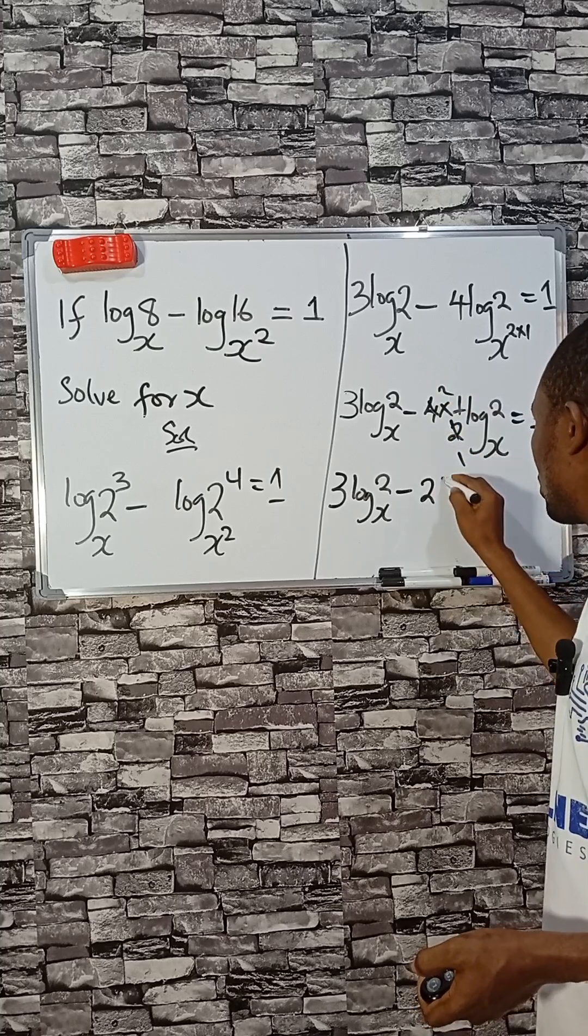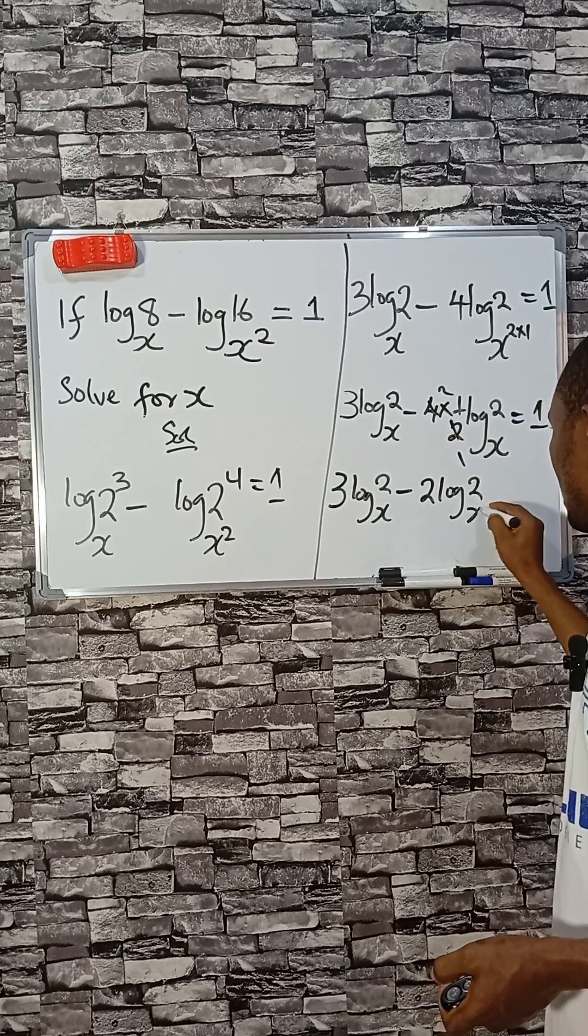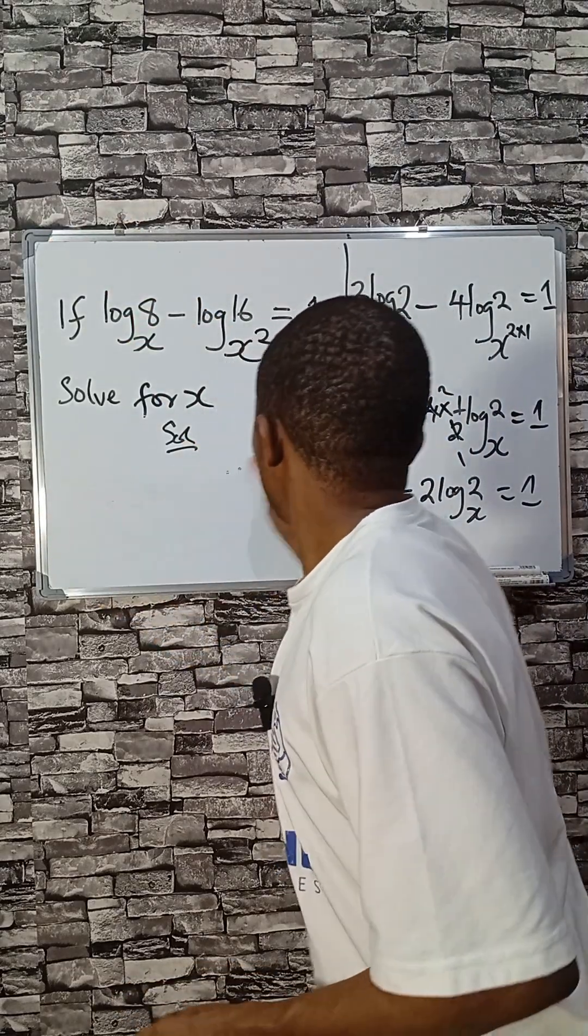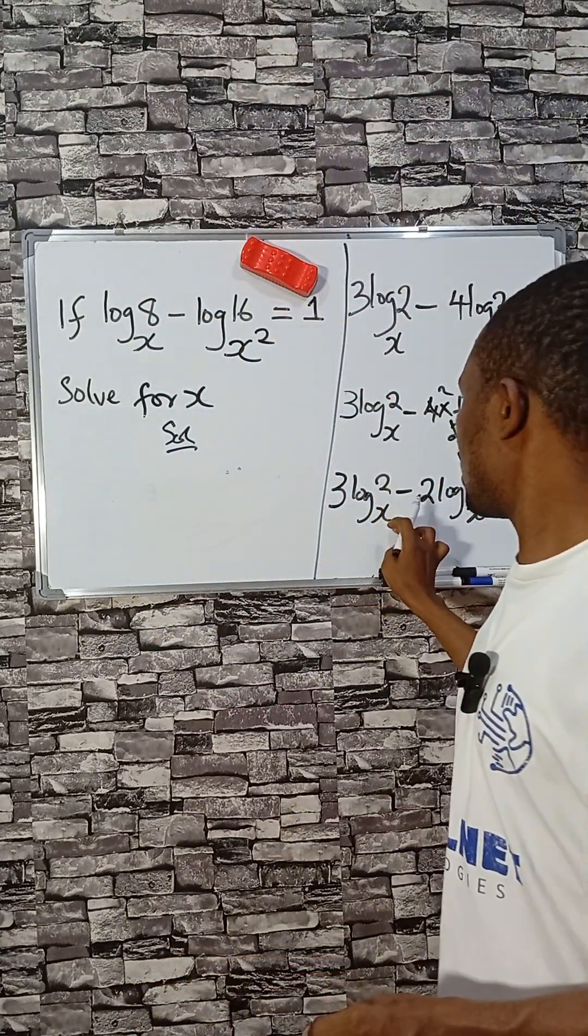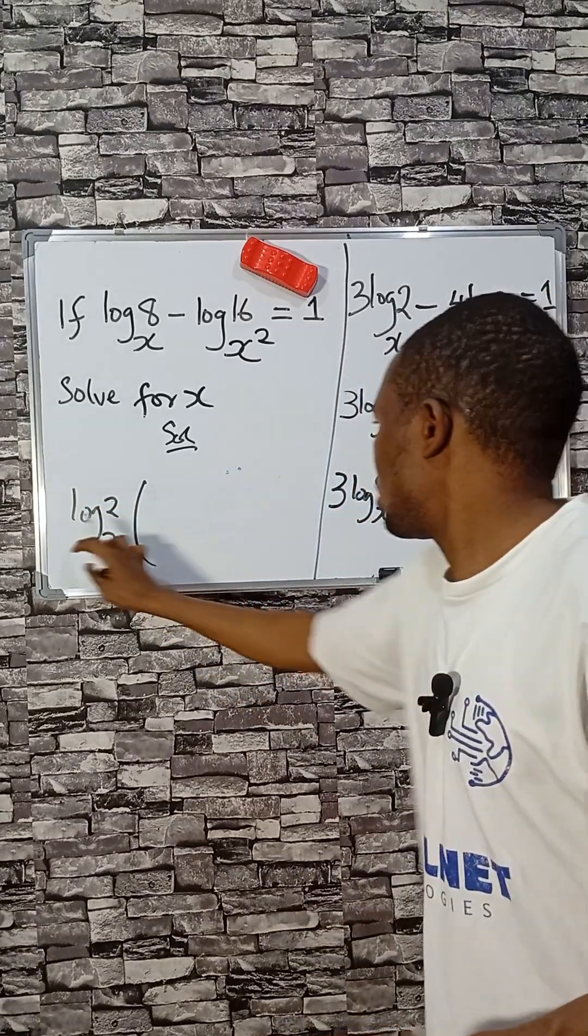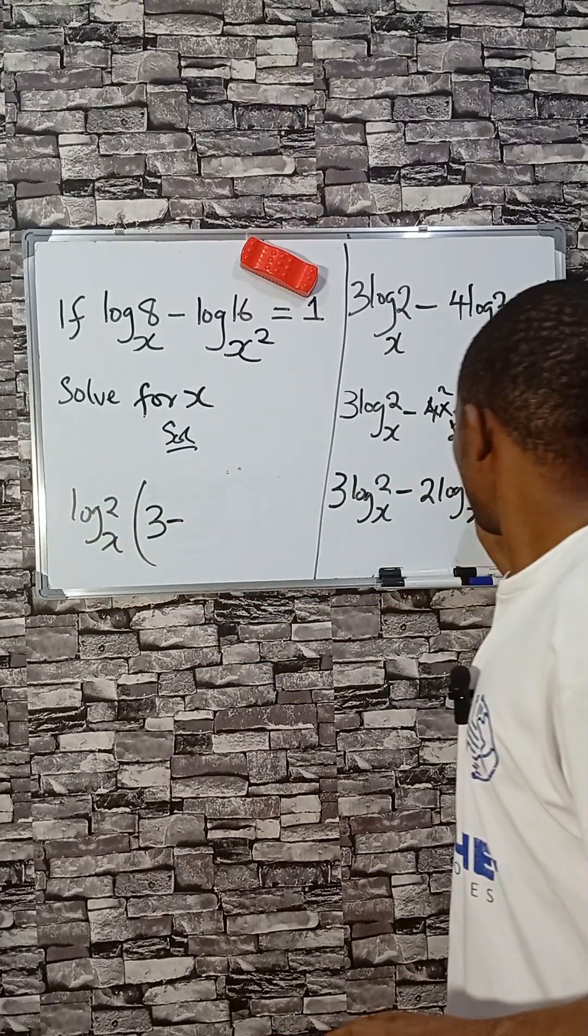What is left is 2 log 2 base X equal to 1. Now log 2 base X is common, so we factorize that. If you divide this by this, you have 3 minus 2 is 1.